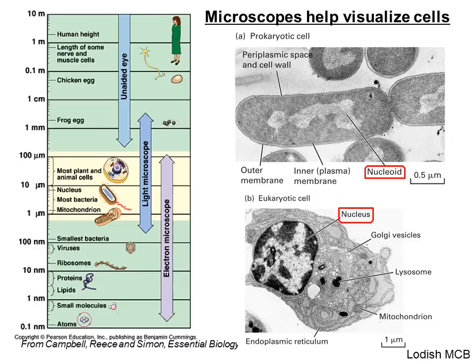When we look at biological systems, we have to look at the different scales at which they exist. We have large organisms like people, cats, and dogs — we do not require a microscope to see them. However, after about one millimeter, creatures are too small for us to discern with the naked eye, and that's when we require the help of microscopes.